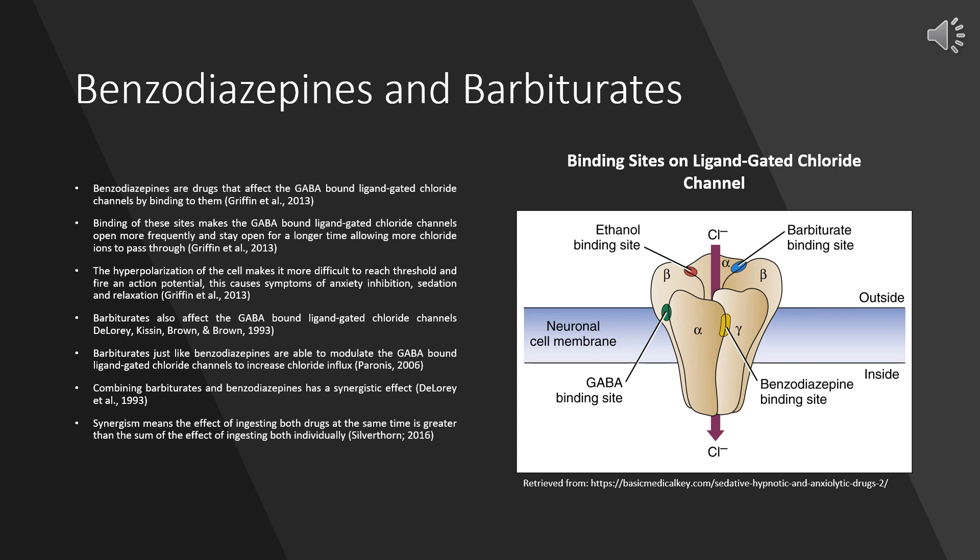This increased influx of chloride ions into the nerve cell causes hyperpolarization. The hyperpolarization of the cell means a greater depolarization is required to reach the threshold to fire an action potential. This greater signal required to reach threshold means people who have ingested a drug like Valium experience the inhibition of anxiety, sedation, and relaxation of smooth muscle.